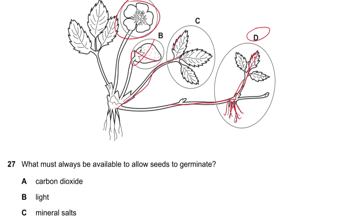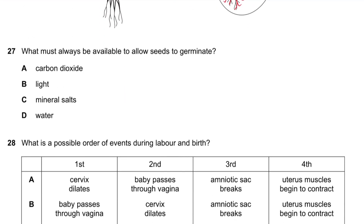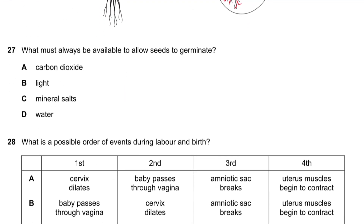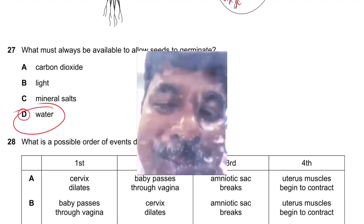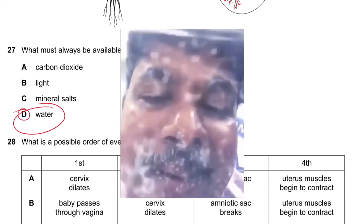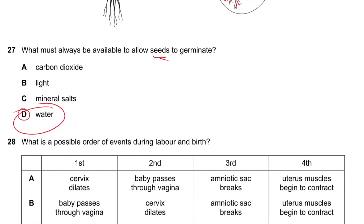Question 27: What must always be available to allow seeds to germinate? The only thing that must be available is water. Seeds do not need carbon dioxide, light, or mineral salts to germinate — the seed already has its own minerals and nutrients.